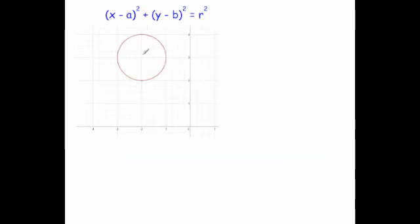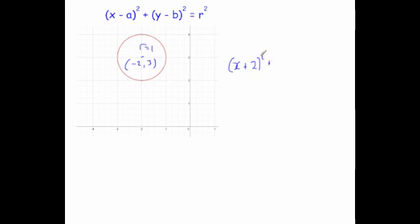Next, here we've got another circle. This time the center is at the coordinate (-2, 3), and the radius of the circle is equal to 1, so r equals 1. The equation would be x minus the x-coordinate — that's minus 2, so minus minus 2 gives plus 2 — all squared, plus y minus the y-coordinate for the center, which is 3. So y minus 3, all squared, equals 1 squared.